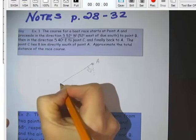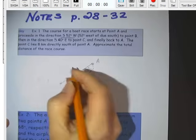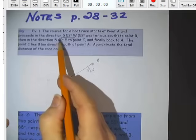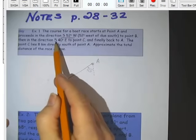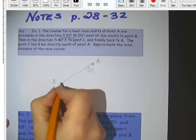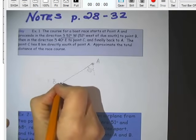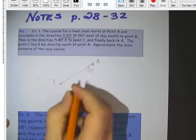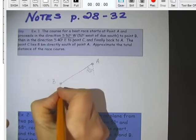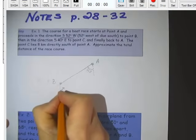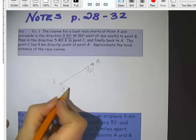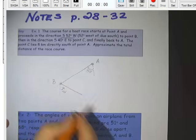And then when you get to point B, it says the direction changes east of south, 40 degrees east of south, going to point C. So here's point B. From that direction we were going, if we put in another southern axis, we want to go 40 degrees towards the east, or towards the right.